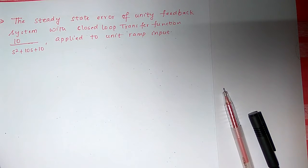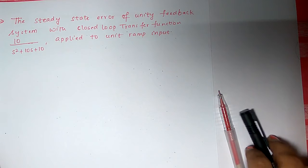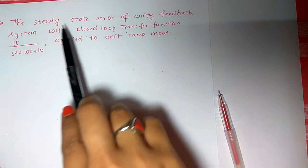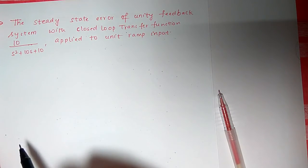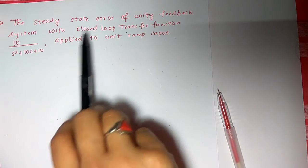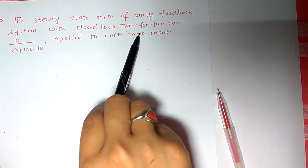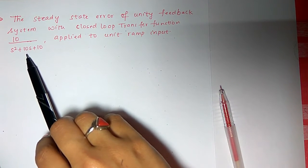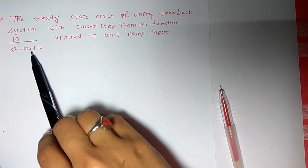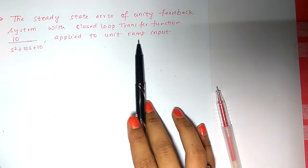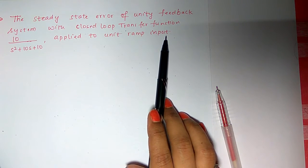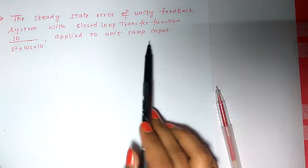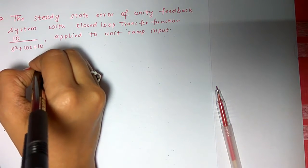Let's solve a problem: finding the steady state error and error constants. The given problem is the steady state error of a unity feedback system with closed-loop transfer function, which is 10 divided by s squared plus 10s plus 10. It is applied to a unit ramp input, so if you are using the unit ramp input, only KV exists.